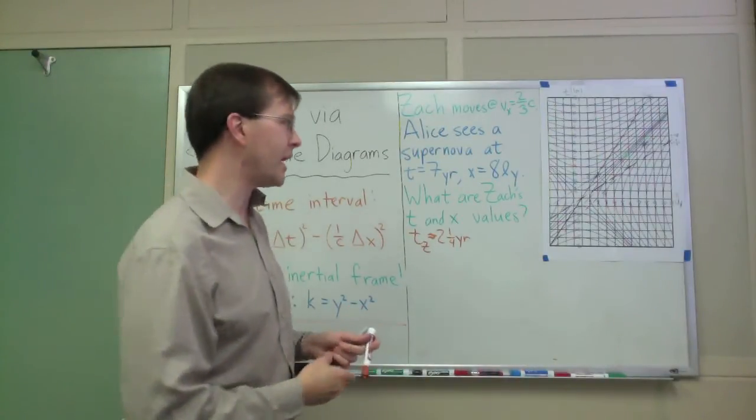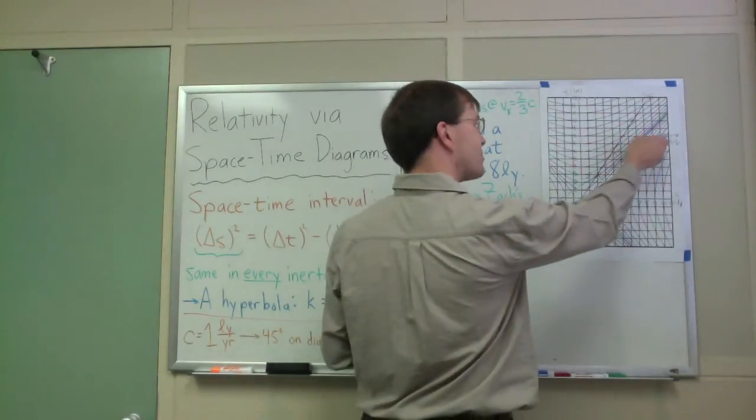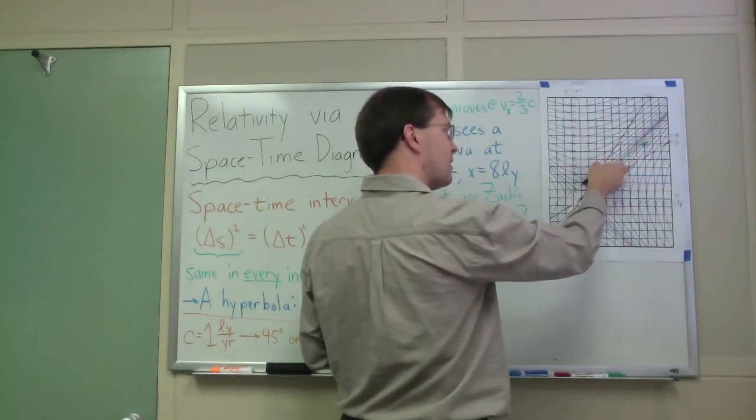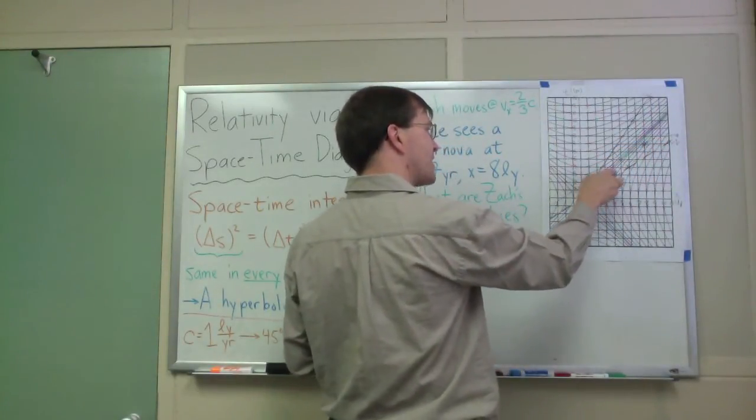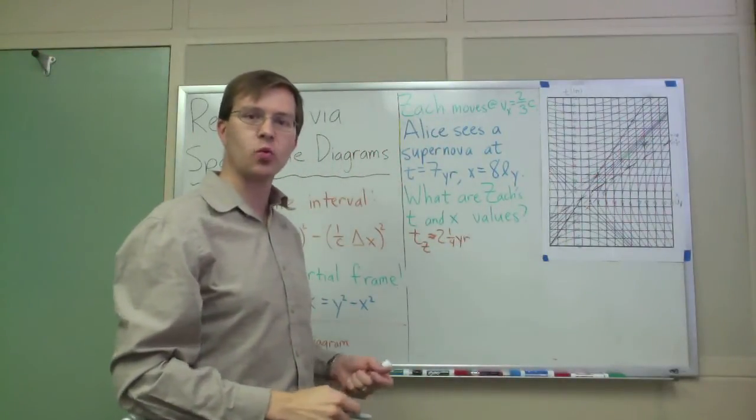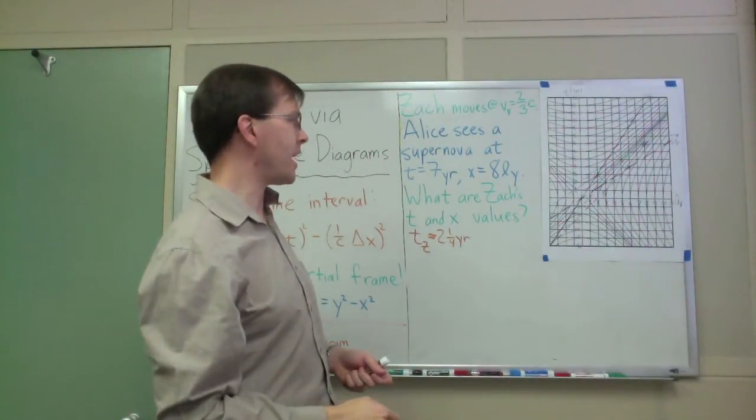That's how I find the time that Zach would say this took place. It's about two and a quarter years after the first one. And again, that's just saying, what time slice did the event I care about happen on? And what was the time for Zach when that time slice intersects with Zach's world line, Zach's path, on this diagram?